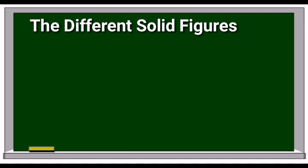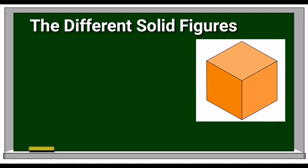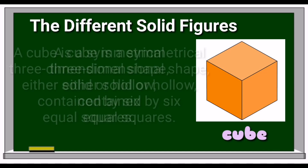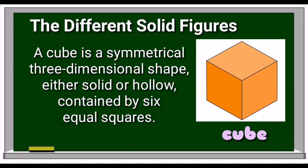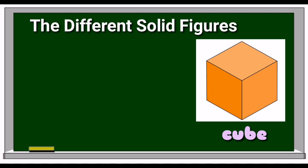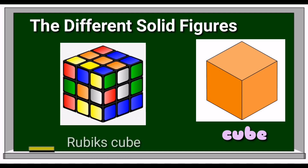The last solid figure is cube. A cube is a symmetrical three-dimensional shape, either solid or hollow, contained by six equal squares. An example of an object that resembles this is a Rubik's cube.